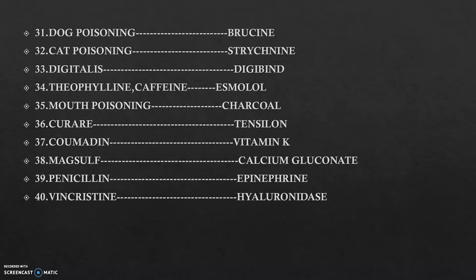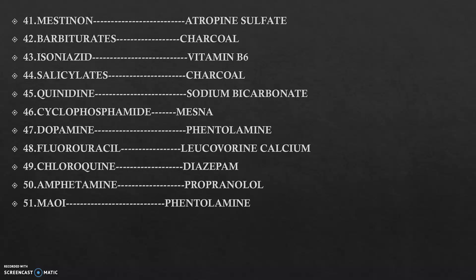Curare — tensilon. Coumarins — vitamin K. Whenever oxalate poisoning occurs, we use calcium gluconate, which reverses the oxalate activity. In case of penicillamine toxicity, we use epinephrine. For vincristine, we use hyaluronidase. For muscarine toxicity, we use atropine.